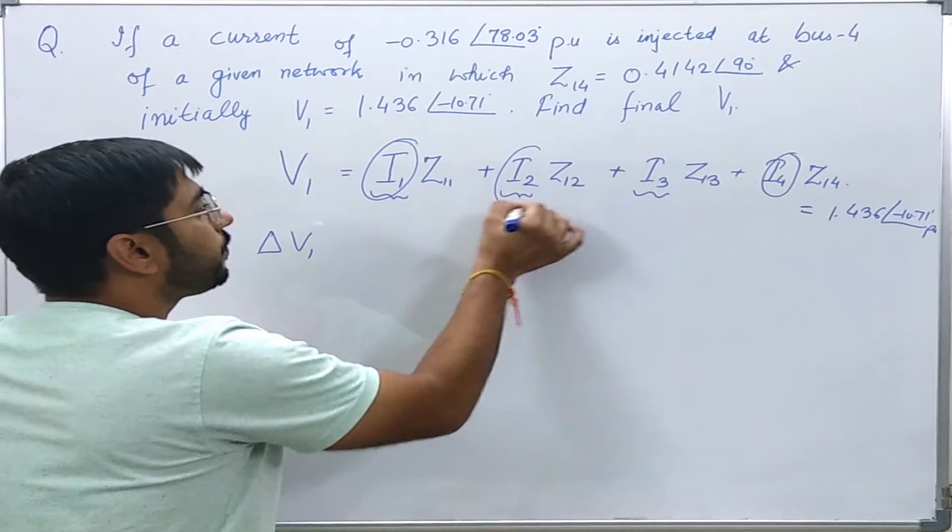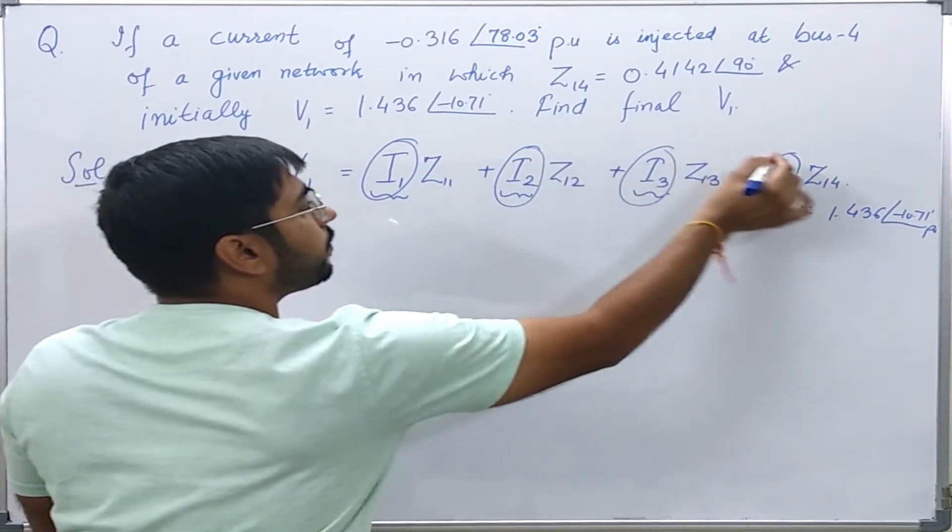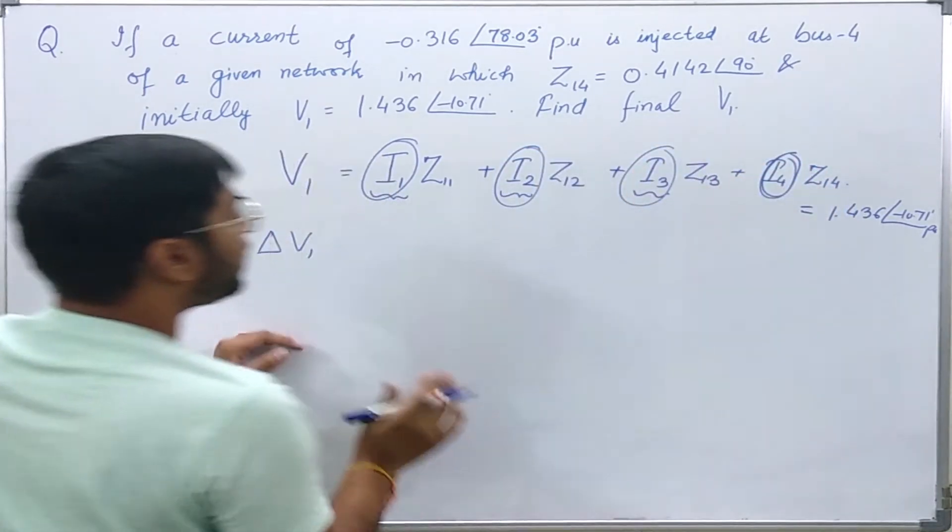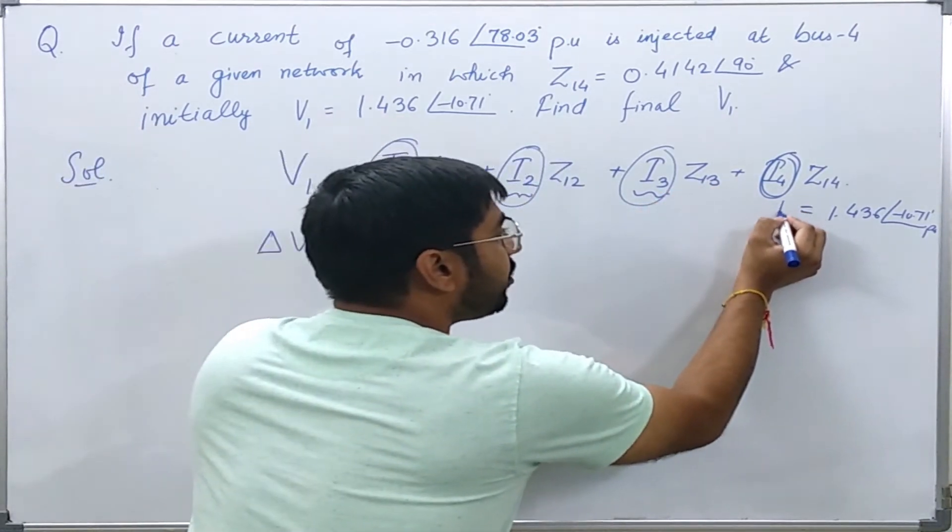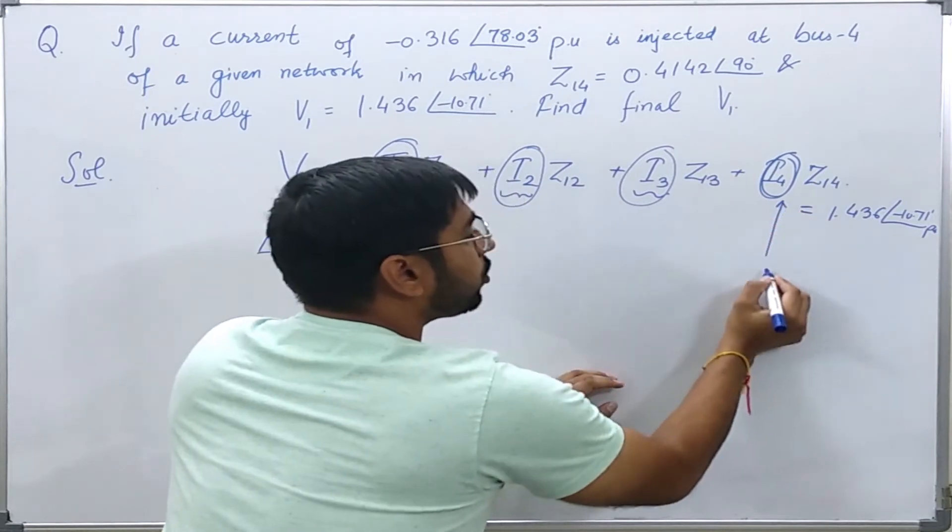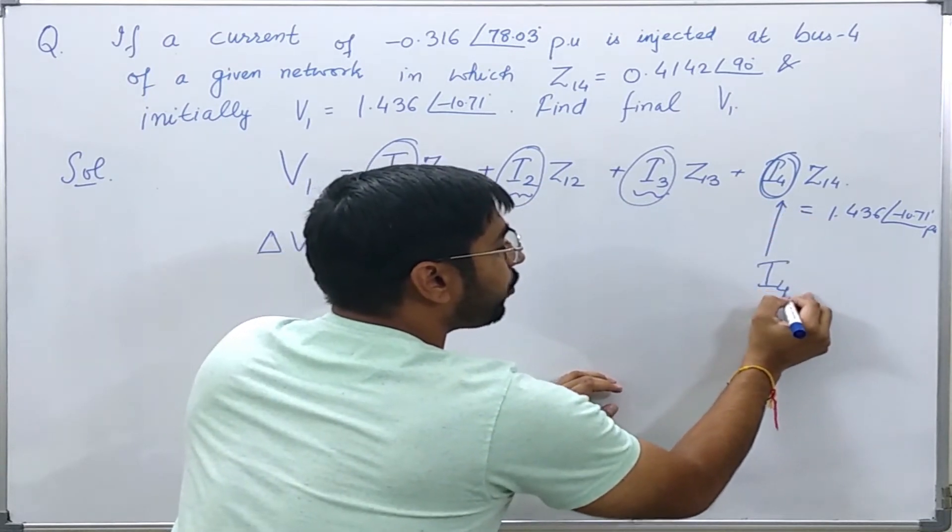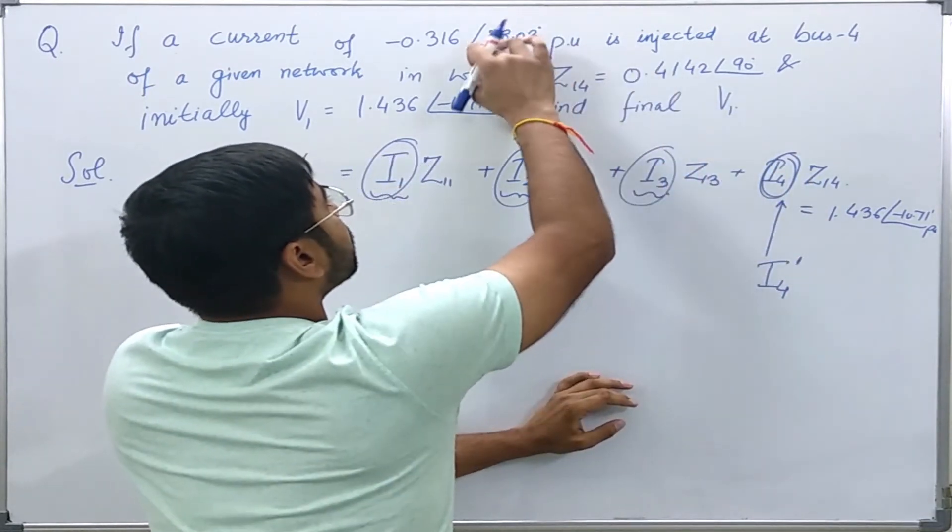If I deactivate I1, I2, I3, I4, and I just want to find the effect of the I4 prime which is being introduced or injected, then I can find its effect on V1.